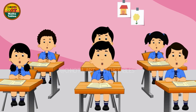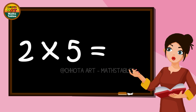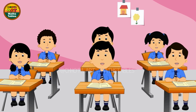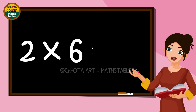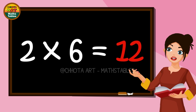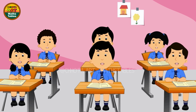Two fours are eight, two fours are eight. Two fives are ten, two fives are ten. Two sixes are twelve, two sixes are twelve.